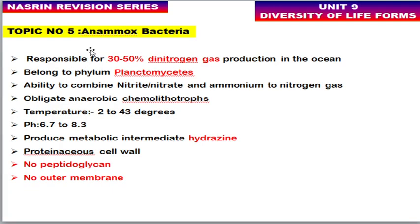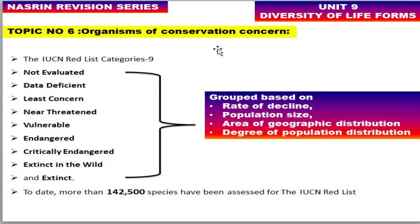Topic five is anammox bacteria. This bacteria is responsible for 30 to 50 percent of dinitrogen production in the ocean. They belong to the Planctomycetes phylum and have the ability to combine nitrite or nitrate with ammonia to produce nitrogen gas. They are obligate anaerobic chemolithotrophs, live at temperatures from -2 to 43°C, survive at pH 6.7 to 8.3, produce a metabolite intermediate called hydrazine, and their cell wall is made up of protein with no peptidoglycan and no outer membrane.